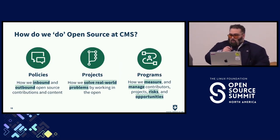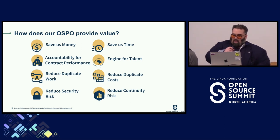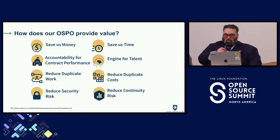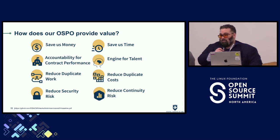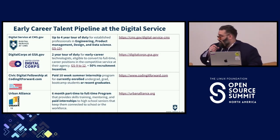About 20% of national healthcare spending is Medicare spending. Open source at CMS falls into three categories: policies about how we inbound and outbound code and contributions, projects that help solve real-world problems, and programs that help measure and manage contributions, risks, and opportunities. The value an OSPO provides includes saving money and time, reducing duplicate work and cost, reducing security and continuity risk, providing an engine for talent, and providing accountability for contractor and employee performance.